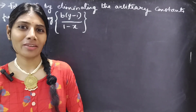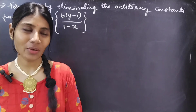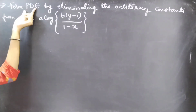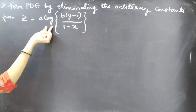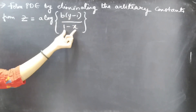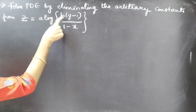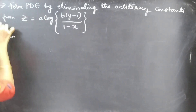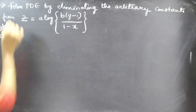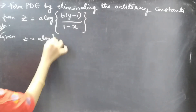Hello everyone, this is Jay Kalpana here. In this video we're going to see a problem from partial differential equations. The problem is to form a partial differential equation by eliminating the arbitrary constants a and b from z = a·log(b·y - 1/(1-x)).